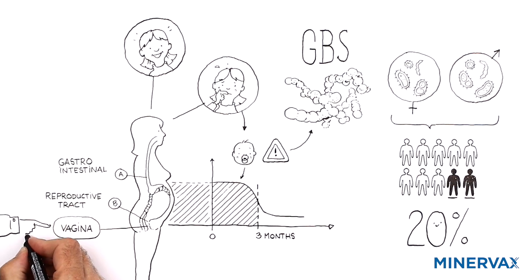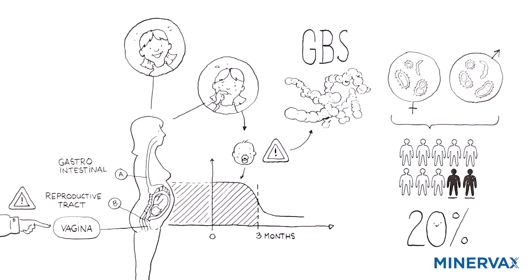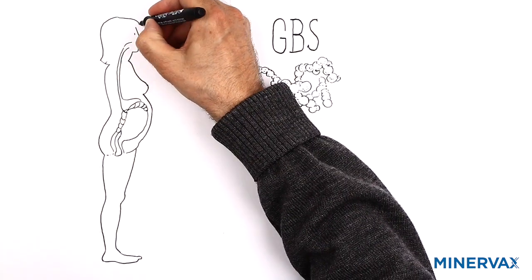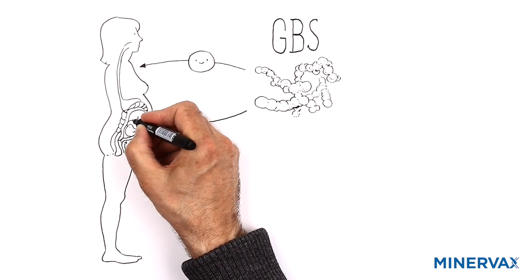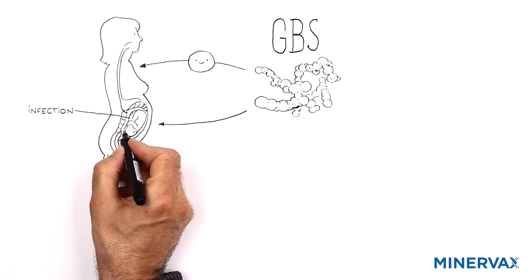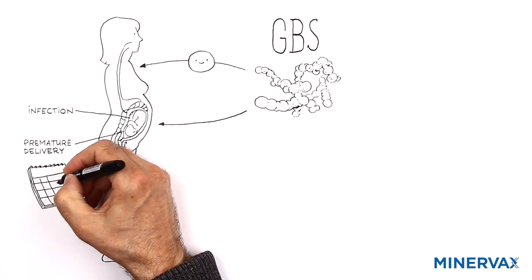It's the bacteria in the vagina that may pose problems in pregnant women. Even though the mother generally has no problems as a consequence of carrying GBS, the bacteria can spread from the vagina up into the uterus and amniotic fluid during pregnancy, where it may cause